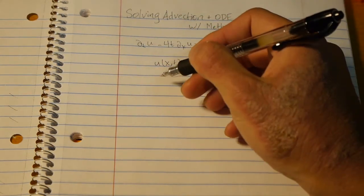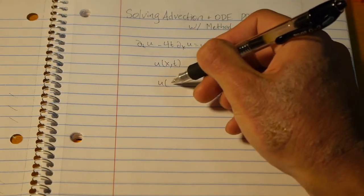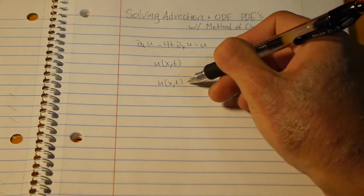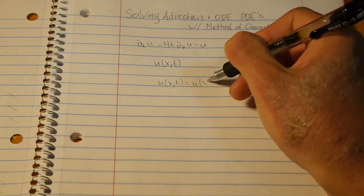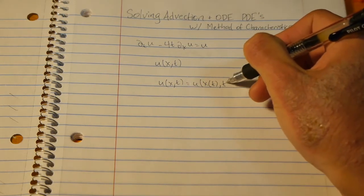So we'll start by trying the ansatz u(x(t), t) equals u(x of t and t).